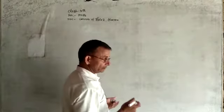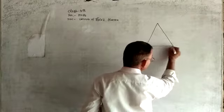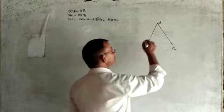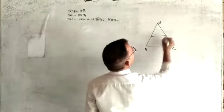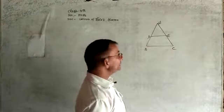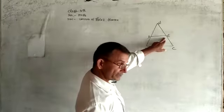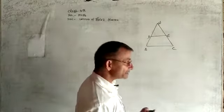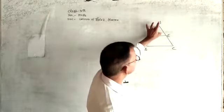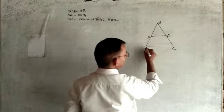First of all, I am drawing the figure. Suppose this is triangle ABC. Let D be a point on side AB, and E be a point on side AC, such that AD upon DB is equal to AE upon EC. We have to prove that DE is parallel to BC.